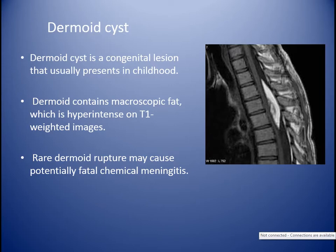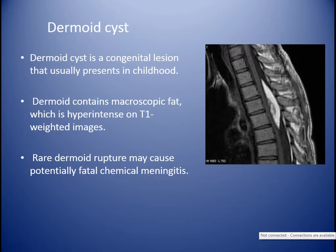Rare lesions in the intradural extramedullary compartment: dermoid is a congenital lesion usually presenting in childhood. It contains fat that appears hyperintense on T1-weighted image. It may rarely rupture, causing fatal chemical meningitis. Fat is hyperintense on T1, hyperintense on T2, and suppresses on fat saturation.